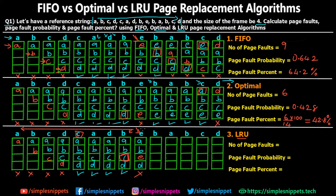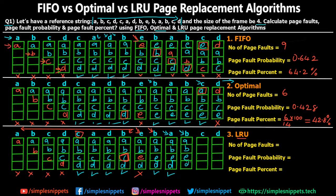So in optimal we looked at the future, but in LRU we look back in the past to find the page least recently referenced compared to other pages. Moving ahead: B is requested and already in the frames — no page fault. Frames: A, B, E, D. Then A is requested and already there — no page fault. Then B is requested and already there — no page fault. Frames remain A, B, E, D.